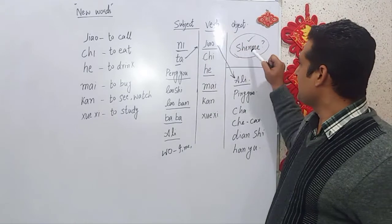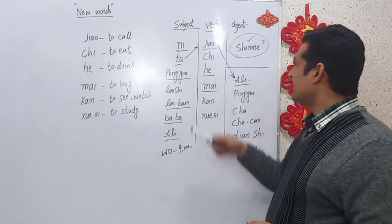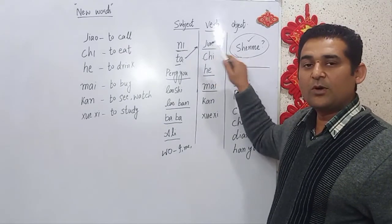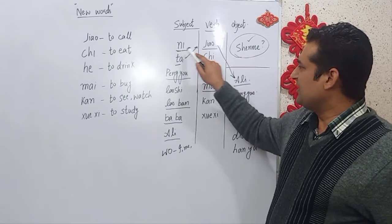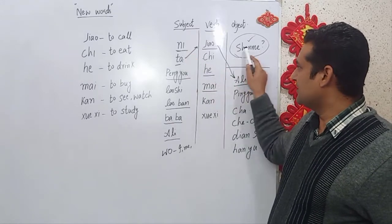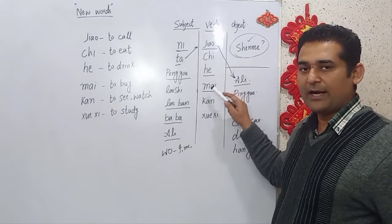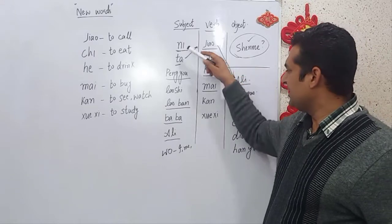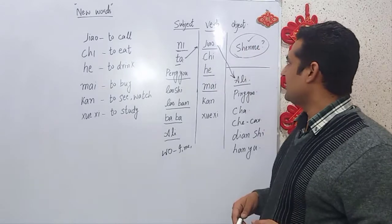Now we come to the question particle 'shí ma', which means 'what'. For example: ni jiao shí ma means 'you call what' — what is your name? Ni chih shí ma means 'you eat what?' Ni he shí ma means 'you drink what?' Ni mai shí ma means 'you buy what?' Ni khan shí ma means 'you watch what?' And ni shui xi shí ma means 'you study what?'